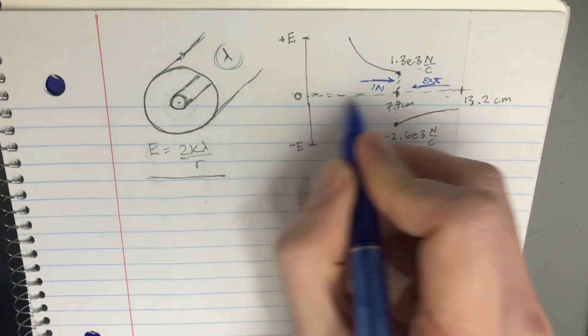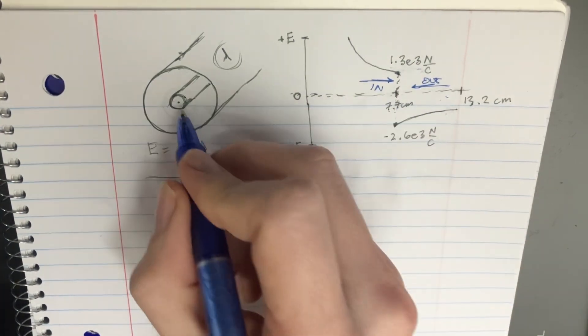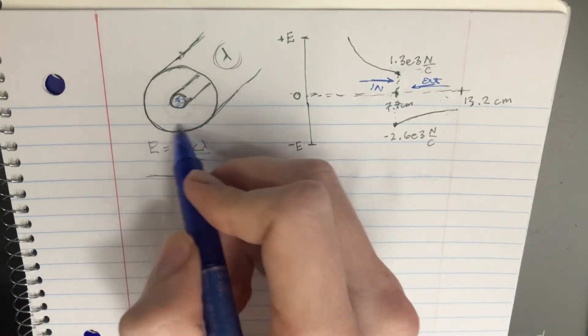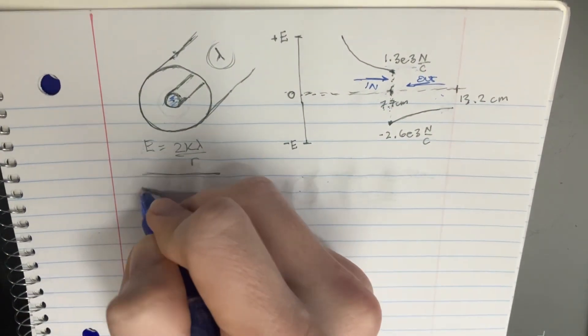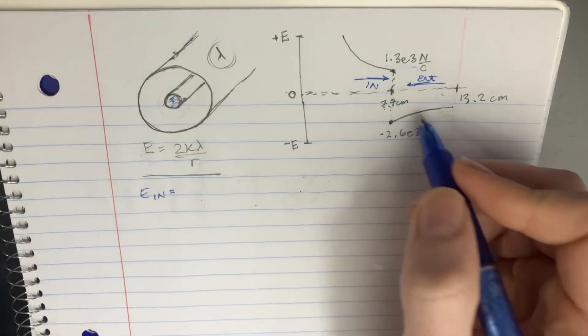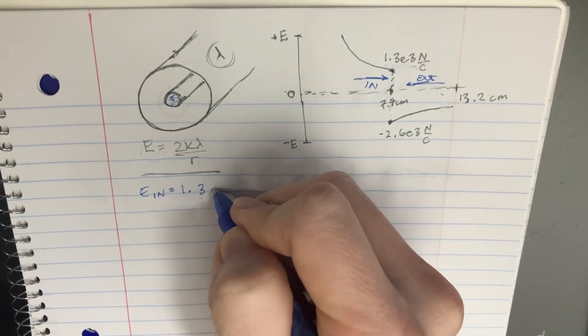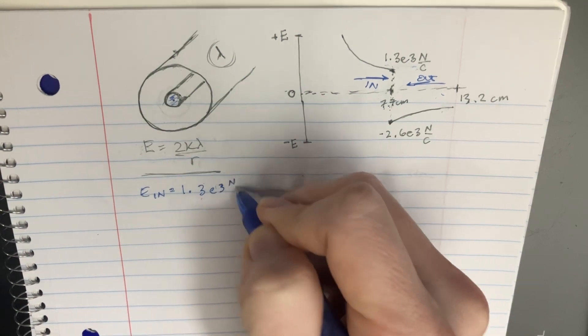Because as the radius is smaller here, that's on the inside. That would be like this part. And then the outside is going to be this other part. So let's try to figure out what E of the n is going to be. This is 1.3 e to the third Newtons over Coulombs.